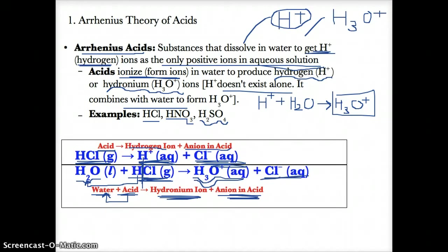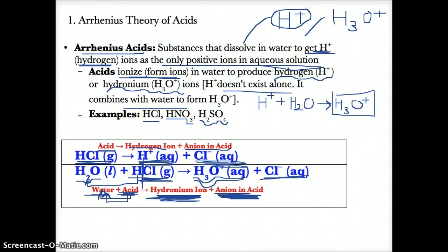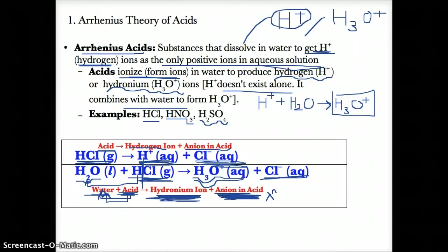The water and acid react together, where the acid donates an H+ to the water. Therefore, the water gains a hydrogen and becomes H3O+ (hydronium), and you also get the original negative ion from the acid, which is written generically as X to the N-.